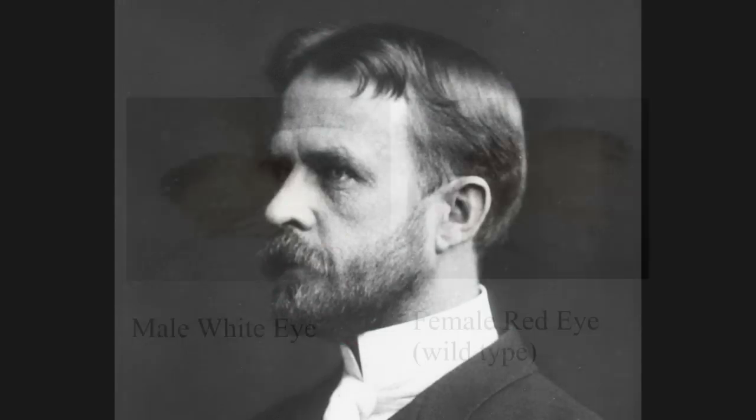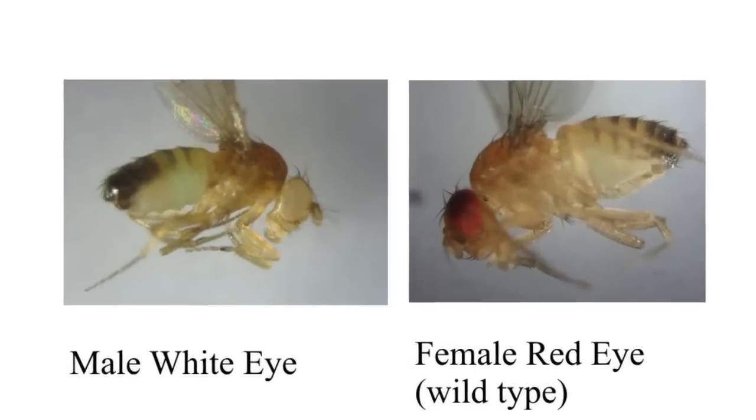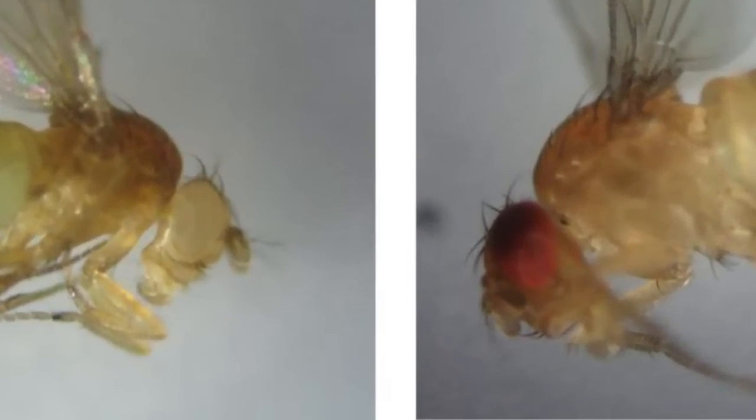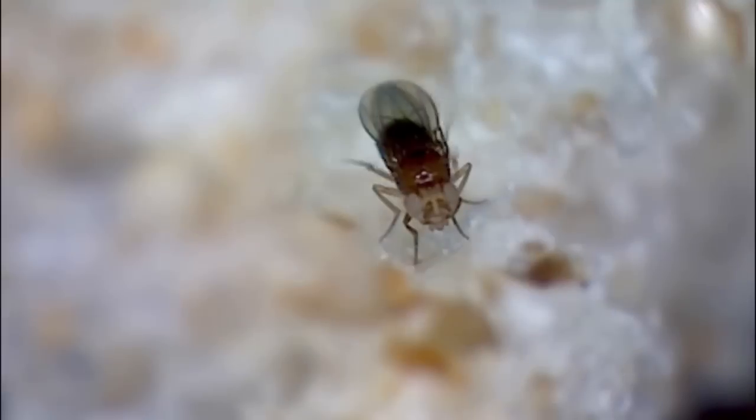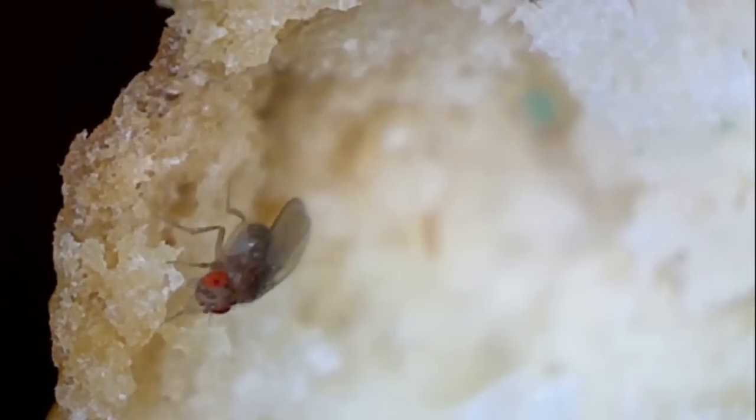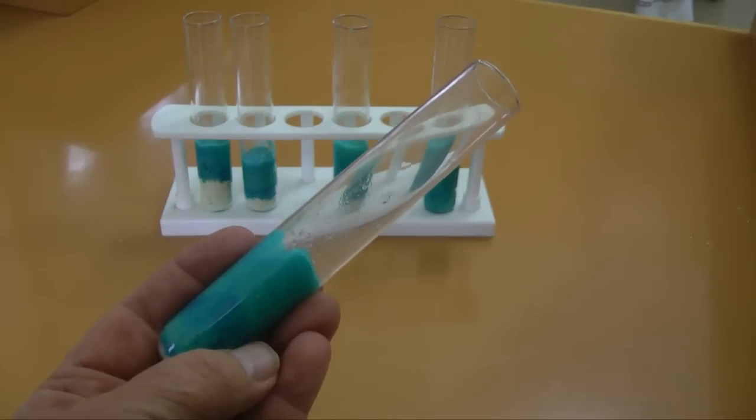This experiment we are replicating was first done in 1910 by research scientist T.H. Morgan. He mated a white-eyed male fly with a red-eyed female. The results were surprising. We need a male white-eyed fly and a virgin female red-eyed fly. The male fly is easy to find, but we need to isolate a female fly before she has a chance to mate.